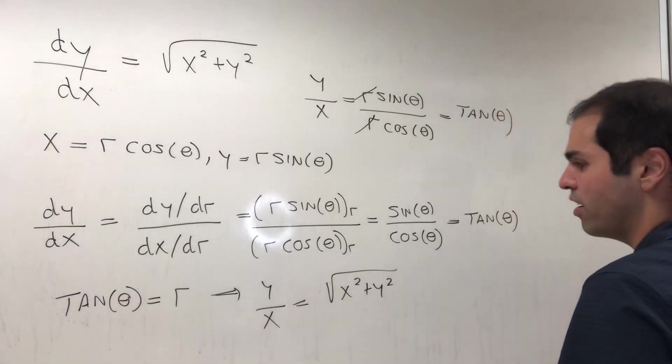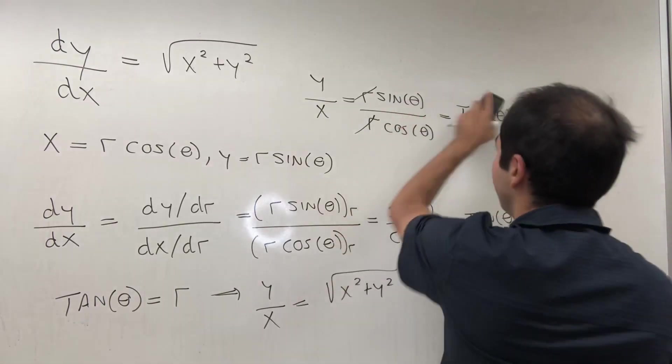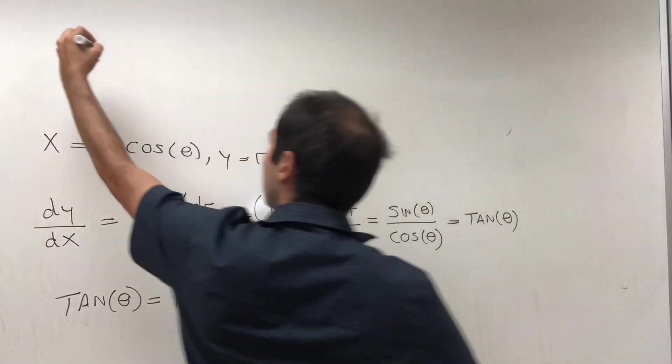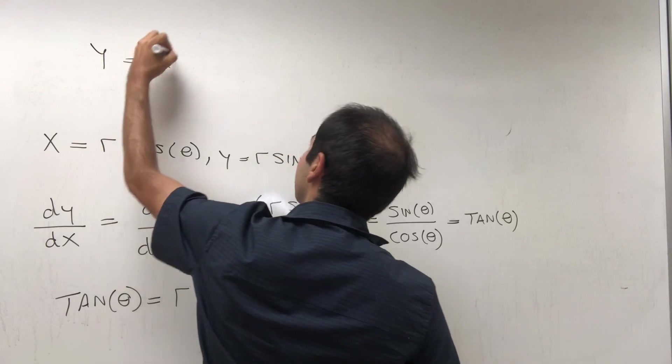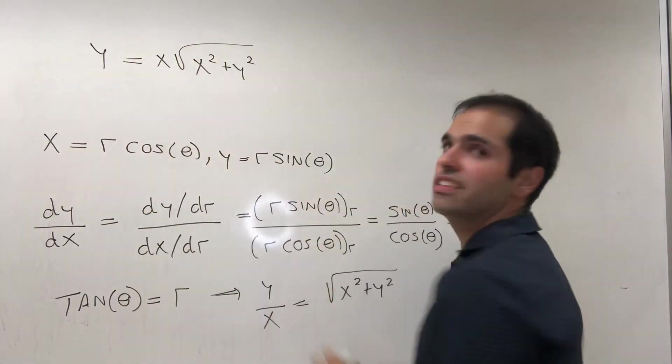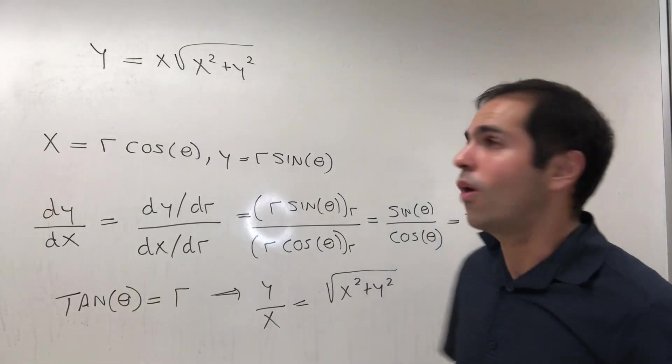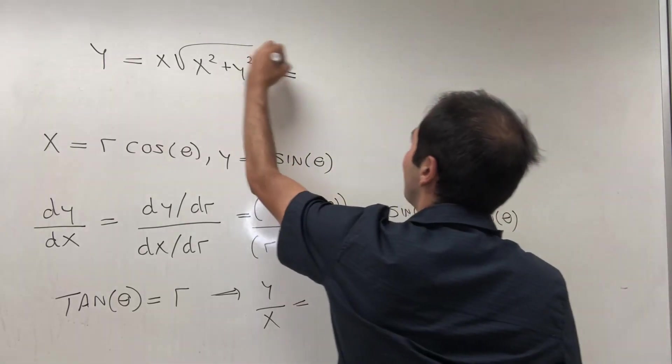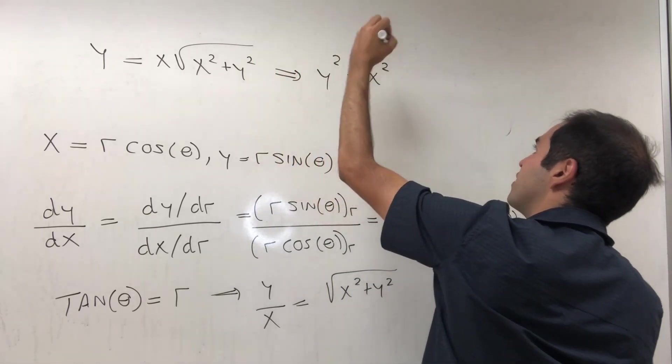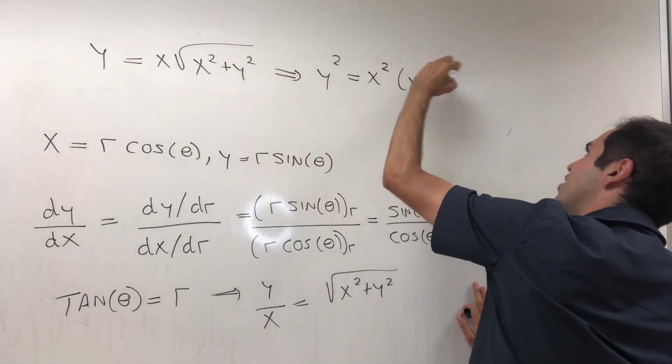Then cross-multiplying, we get y = x√(x² + y²). The nice thing is this is an equation we can solve for y. If we square this, we get y² = x²(x² + y²).